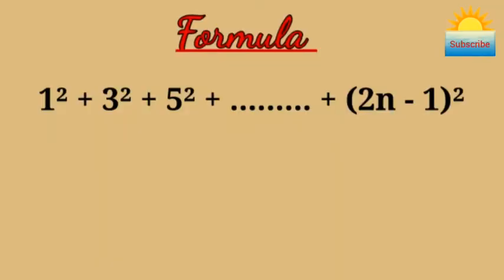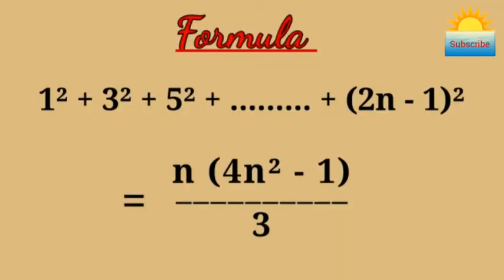The sum of the squares of the first n odd natural numbers is n times (4n² - 1) divided by 3.